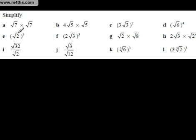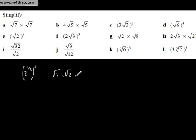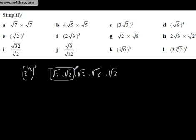Here's another example. We've got 2 to the 1/2 power raised to the 5th power. If we think about what we're going to have, it's saying root 2 times root 2 times root 2 times root 2 times root 2 — that's all. So you can see what's going to happen: that'll make 2, that'll make another 2, and we'll be left with 4 root 2.